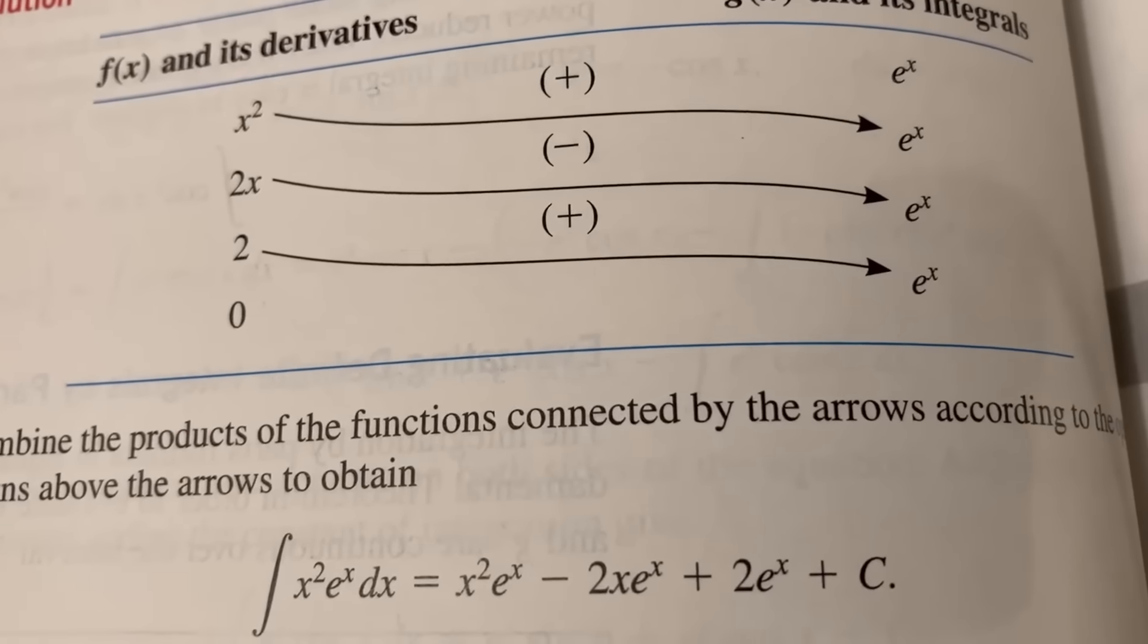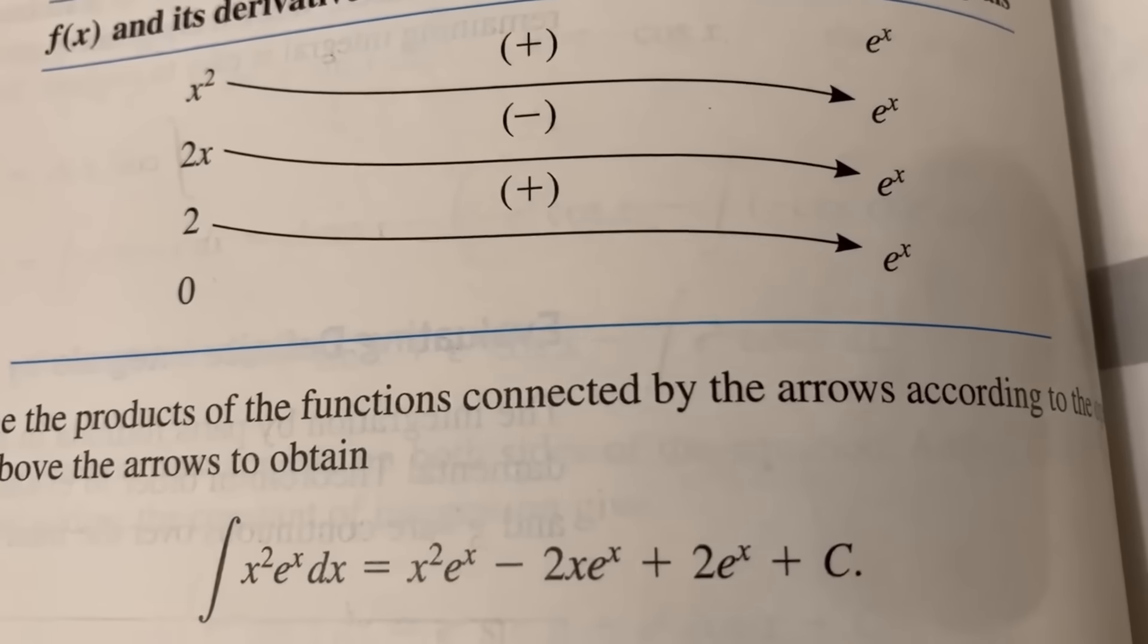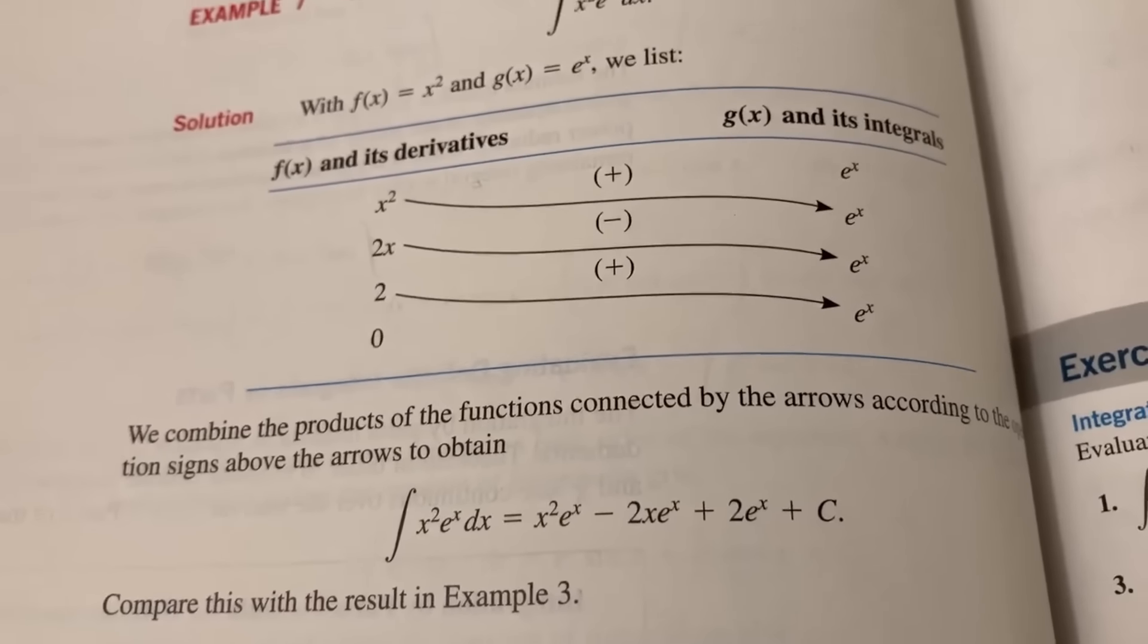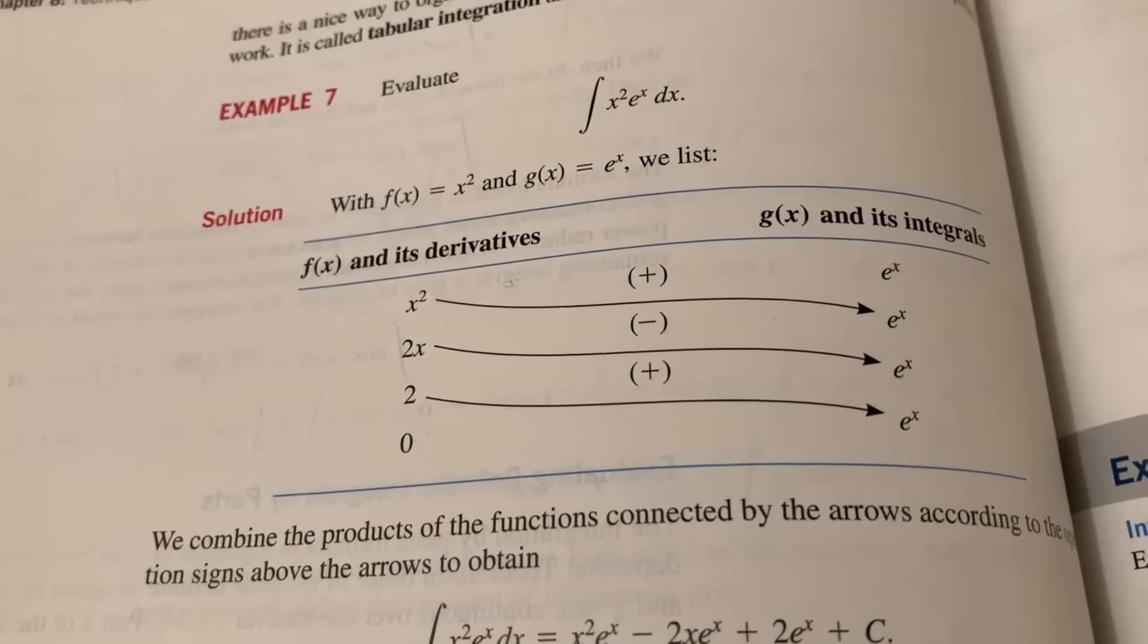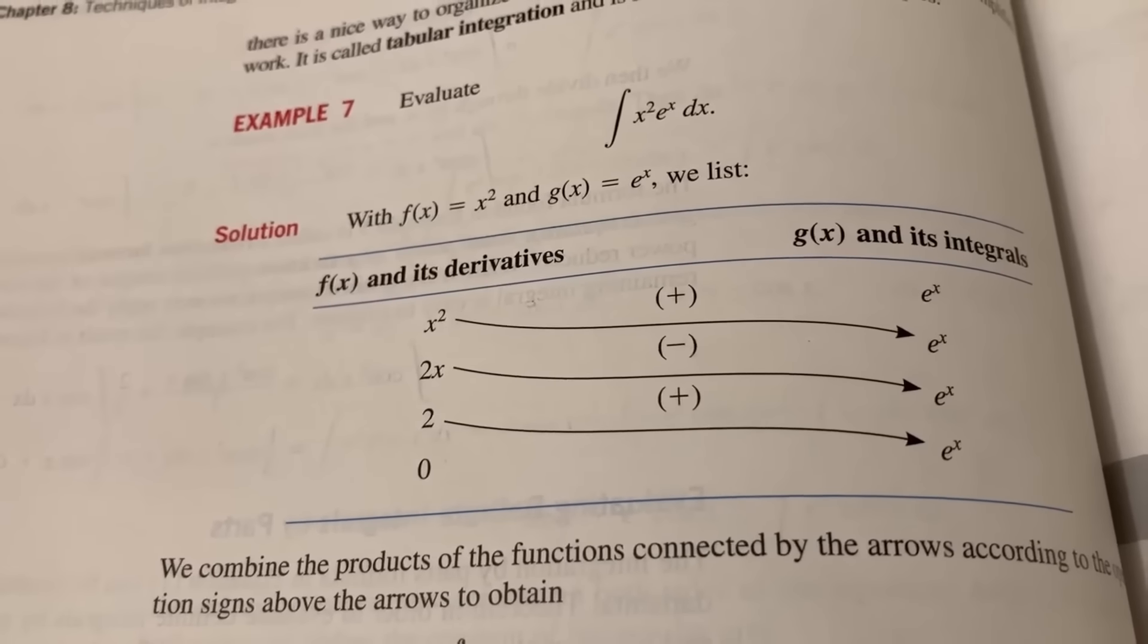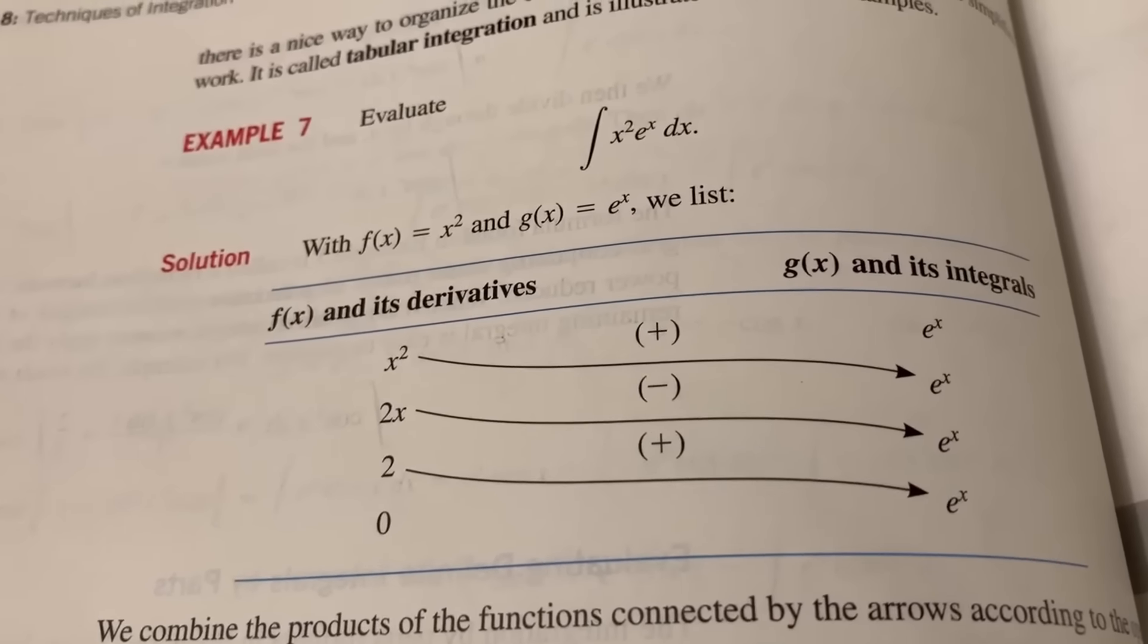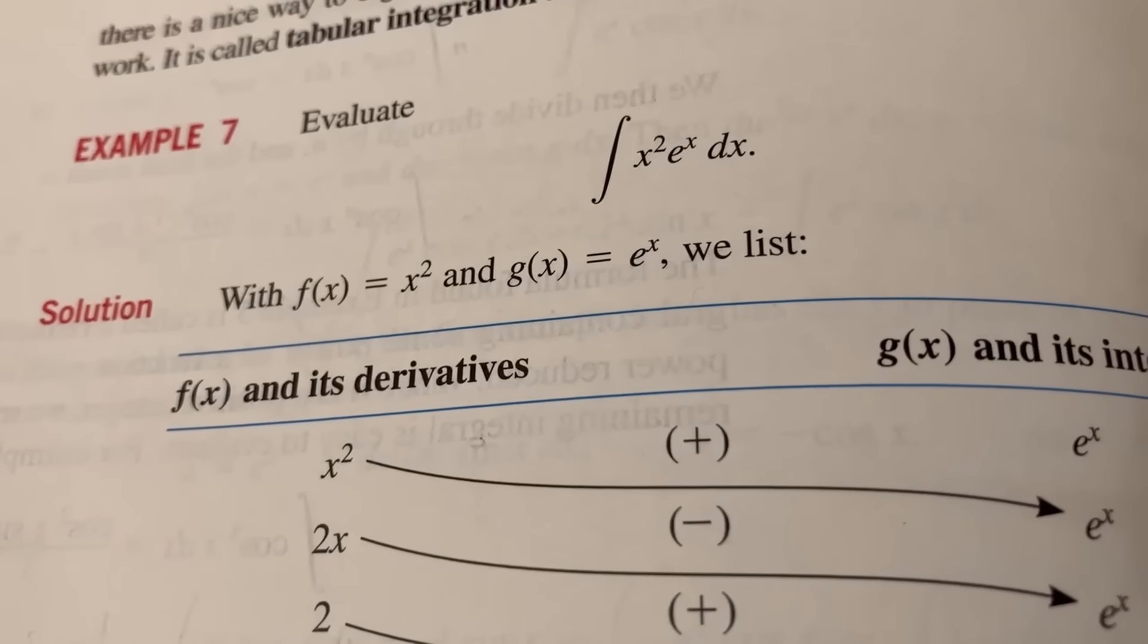x squared e to the x, and then minus 2x e to the x, plus 2 e to the x, plus c. Yep, I just checked it, looks correct. Super awesome, right? And not all books have this technique, and it's a really simple problem. But problems like this come up in other areas of math, and it just makes integrating so much faster. The other way to do this is to use integration by parts two times.